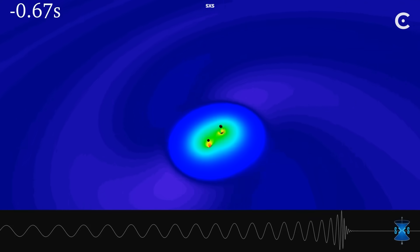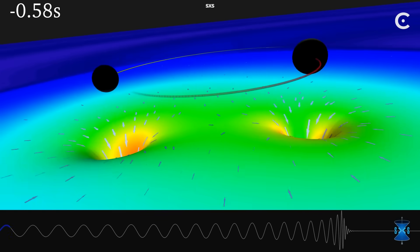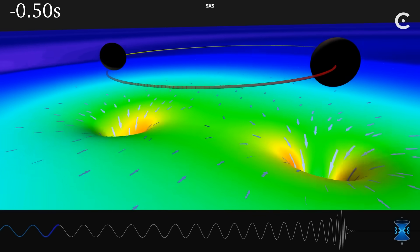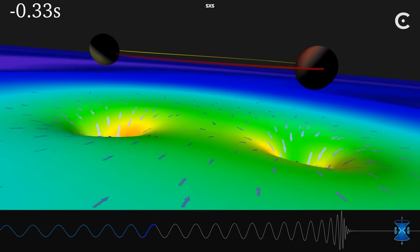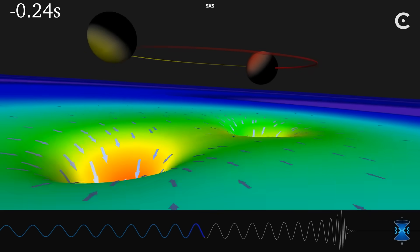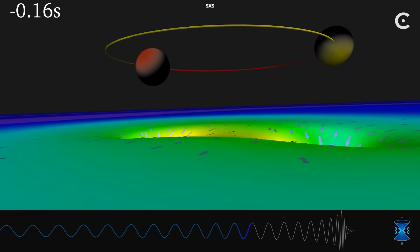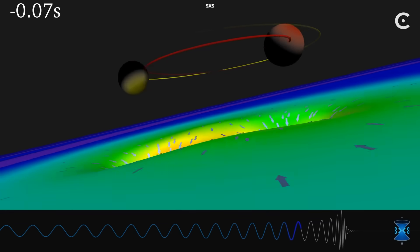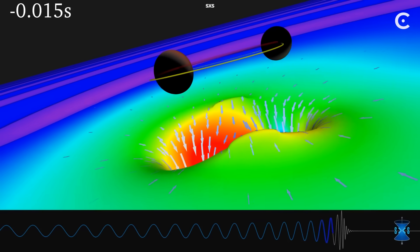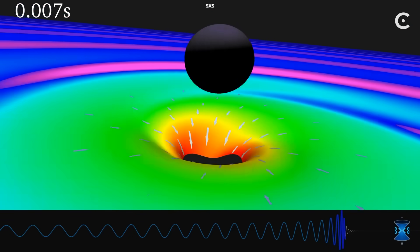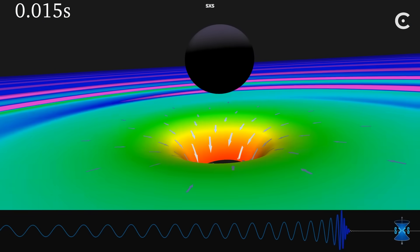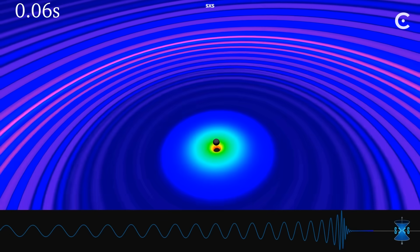The first detection came from two black holes, each about thirty times the mass of our Sun, that had been orbiting each other for millions of years. In their final moments, they completed 250 orbits in just one second before merging into a single black hole. The energy released in gravitational waves during those final moments was greater than the light output of all stars in the observable universe combined.